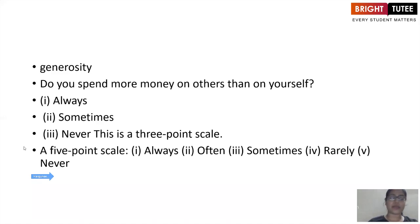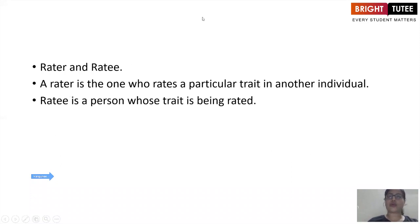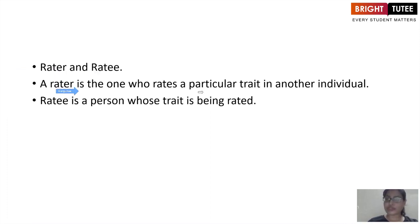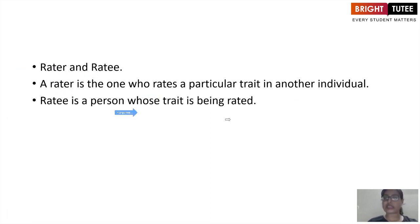A rating scale may have three points, five points, or seven points — that is up to the developer of the rating scale. When we talk about a rating scale, there are two important people involved: the rater, who rates a particular trait in another individual, and the ratee, whose trait is being rated.